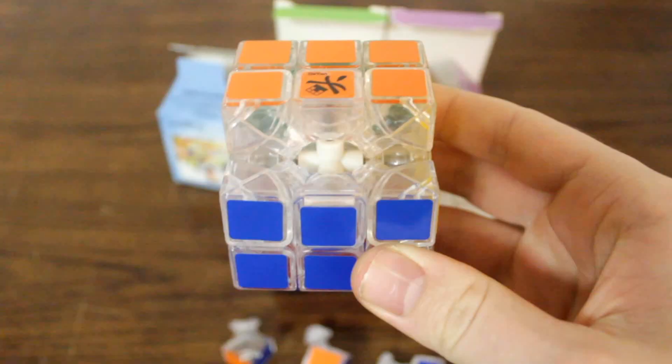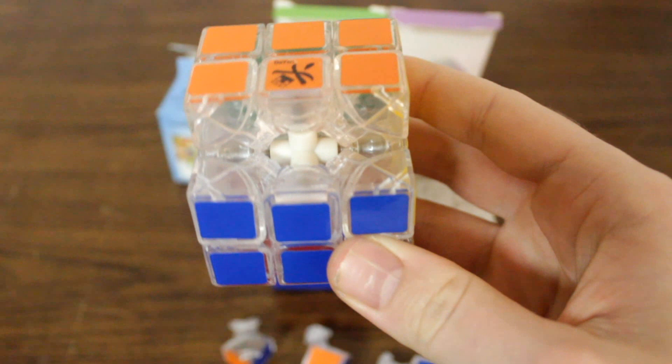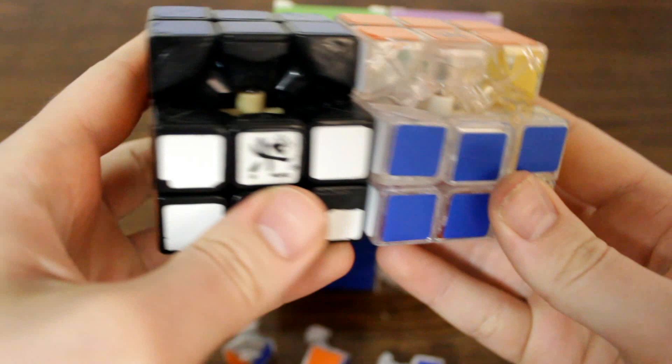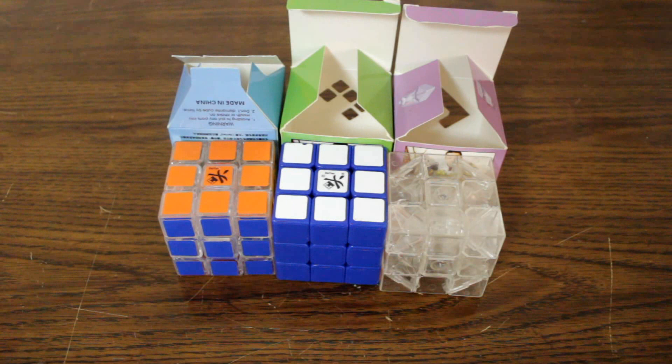One interesting thing about the transparent Linyoung version ones is they all came with white cores, which was different than came with the black and white Linyoung version ones at the time. They also came with the regular stickers applied like this one has on it now.